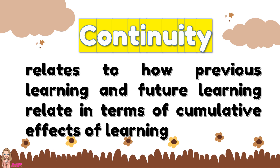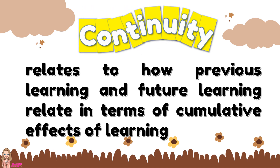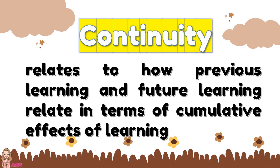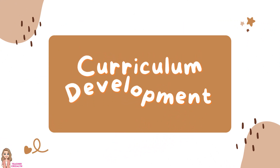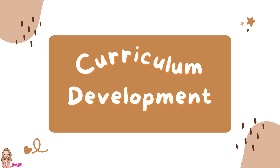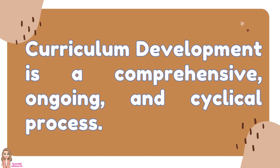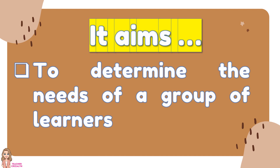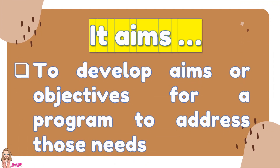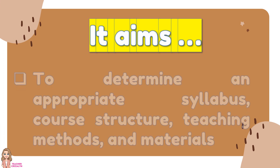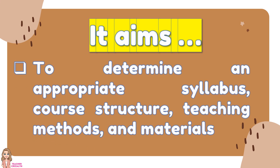Next is the continuity. It relates to how previous learning and future learning relate in terms of cumulative effects. Curriculum development is a comprehensive, ongoing, and cyclical process. It aims to determine the needs of a group of learners, develop objectives for a program to address those needs, and determine an appropriate syllabus, course structure, teaching methods, and materials.